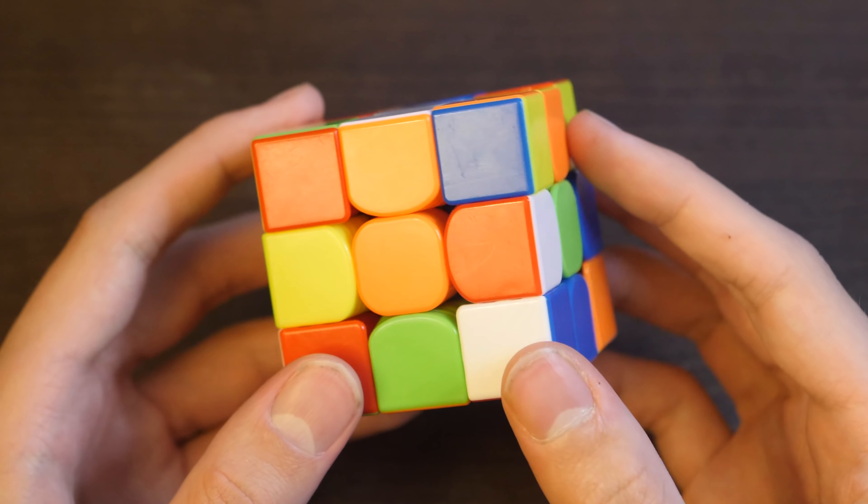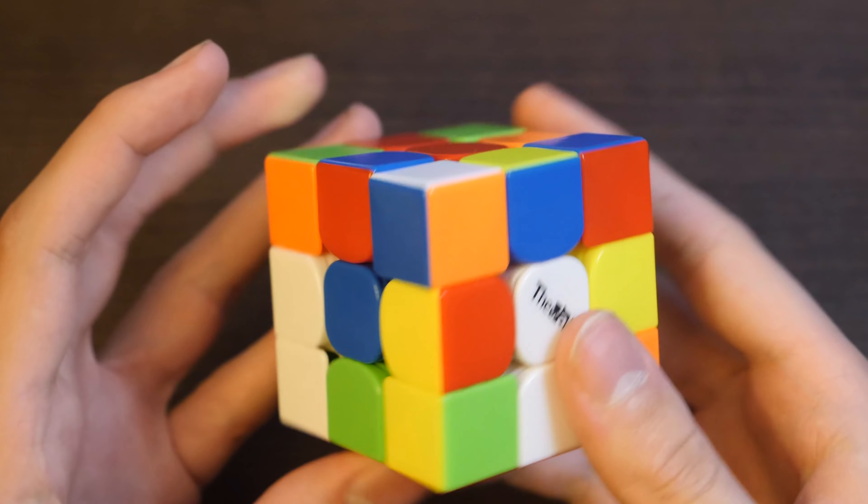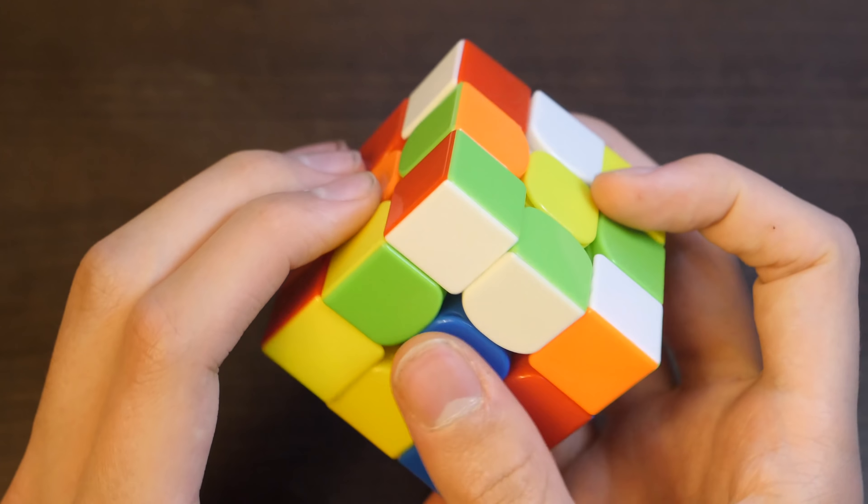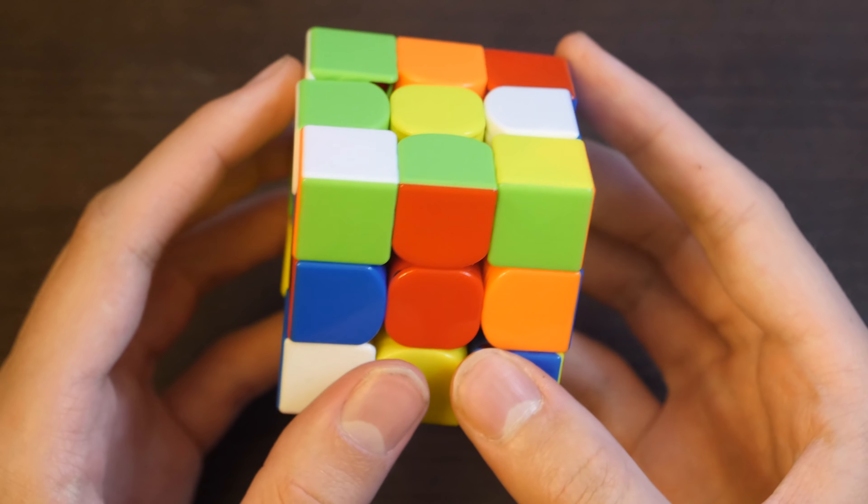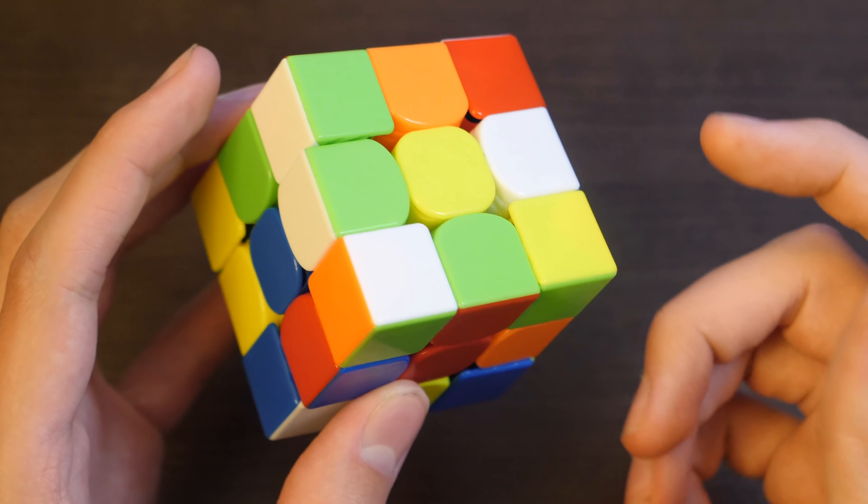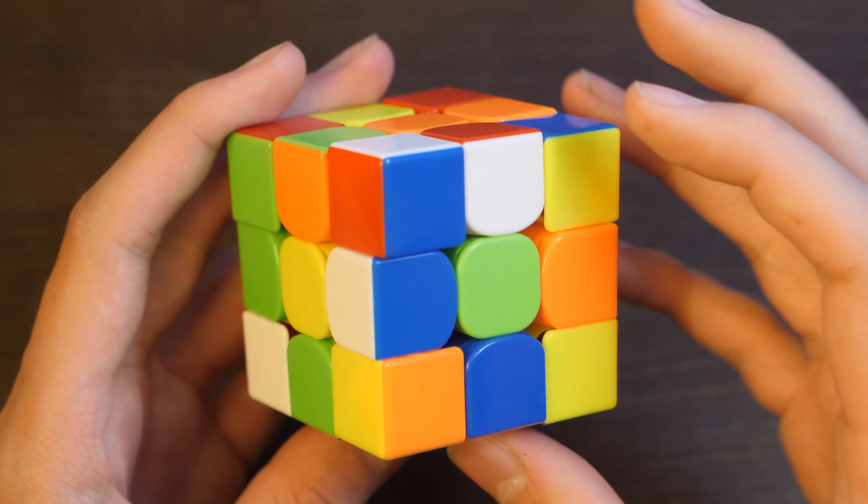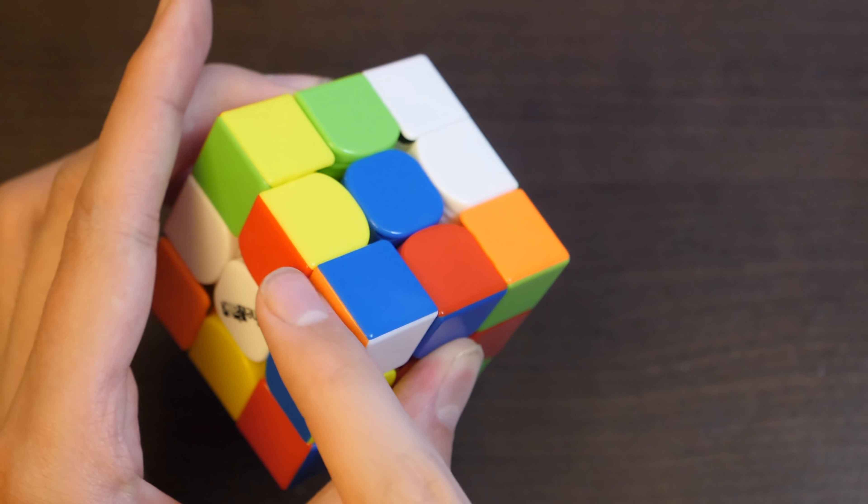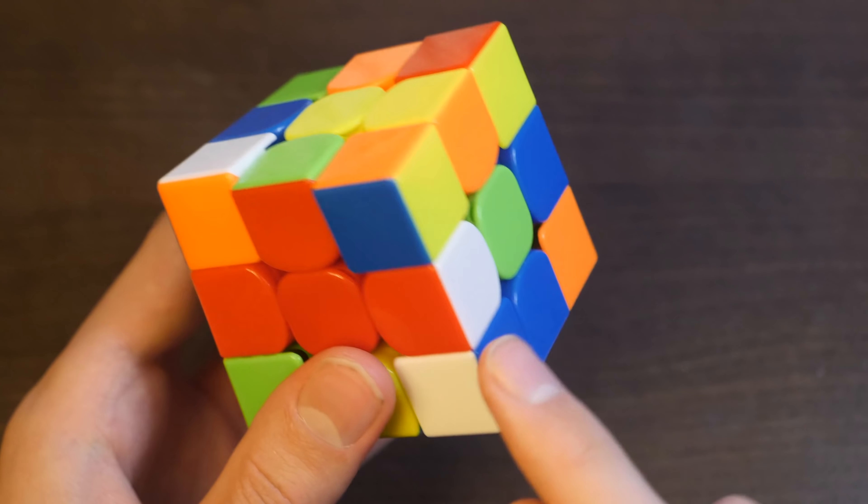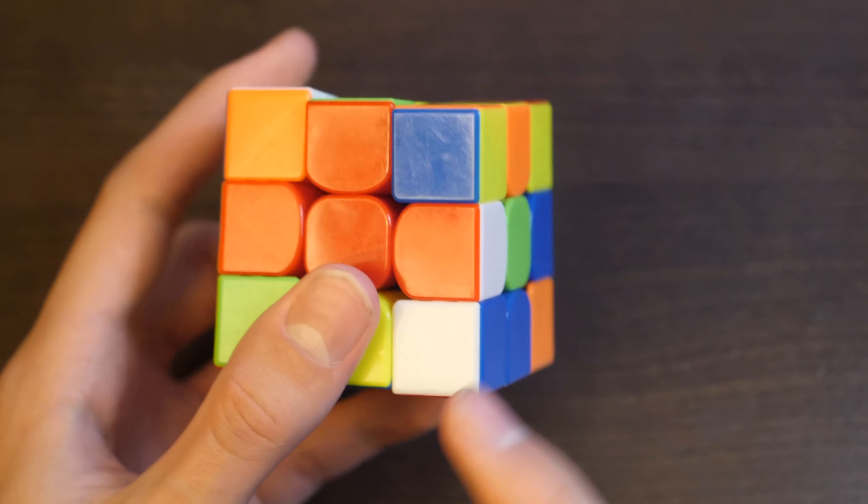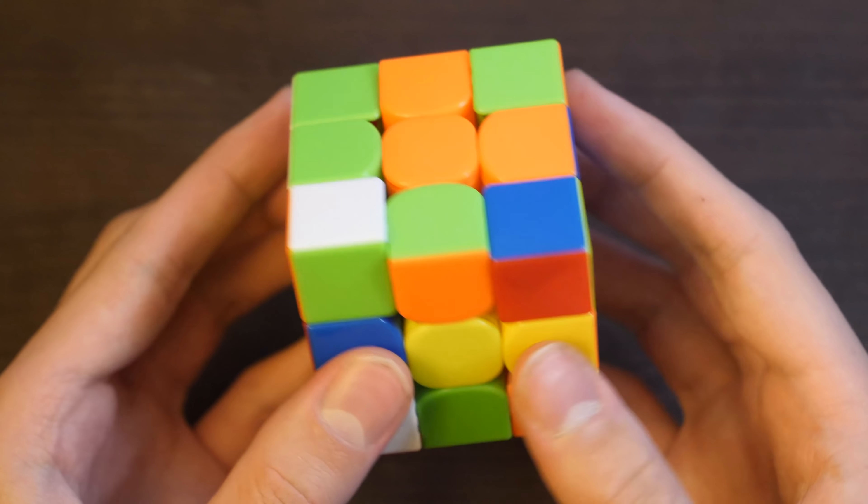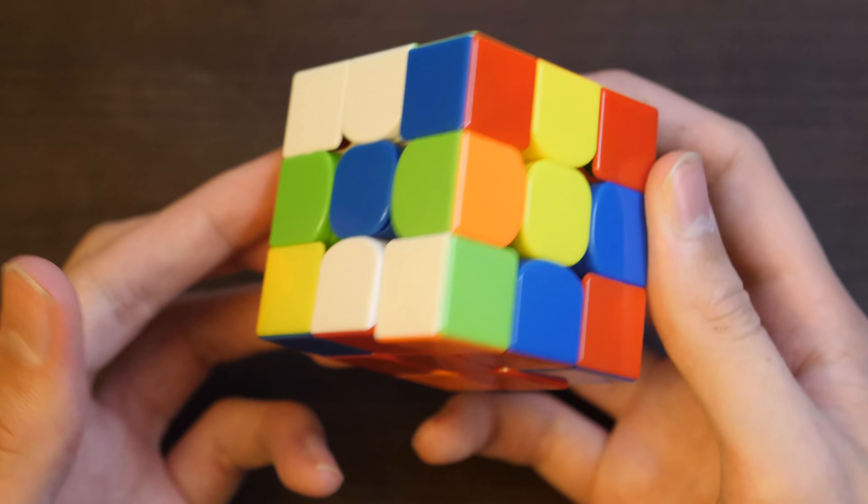For the third solve, Patrick did red cross. His cross pieces are here, here, here, and here, and he's got this free pair already built. So he's going to try and take advantage of that, preserve it while he's solving his cross. So he's got these three, which are all one move away from being solved relative to each other, and then this one, which belongs over here, so he can insert that quickly with just a D2.